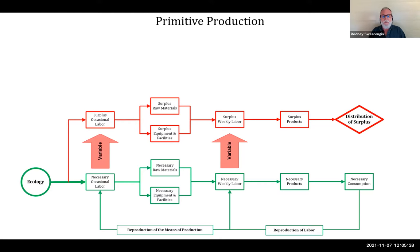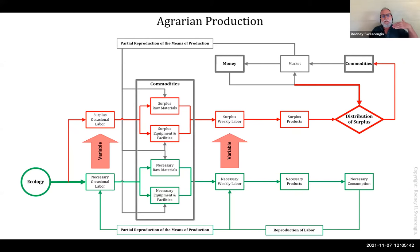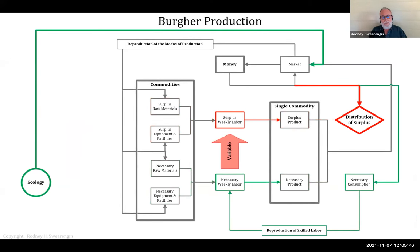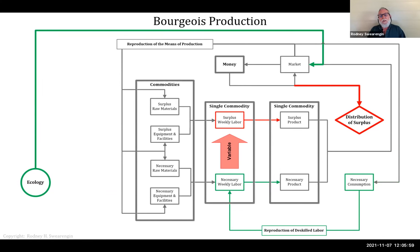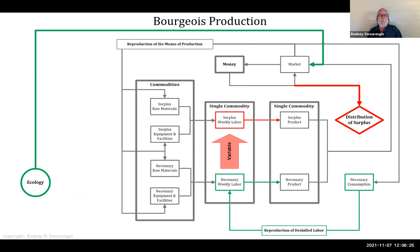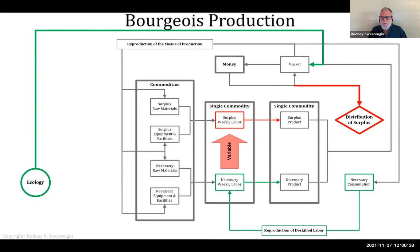From species being we get primitive production, then agrarian production starting around 10,000 years ago, then burger production around the 1300s–1500s, and then bourgeois production — capitalism. The big starting point for capitalism in Europe is the French Revolution in 1789. In England it had already been taking hold in the decades before that, but with the capitalist revolution in France, industrial production began to take place all over Europe. This is what we live in right now.